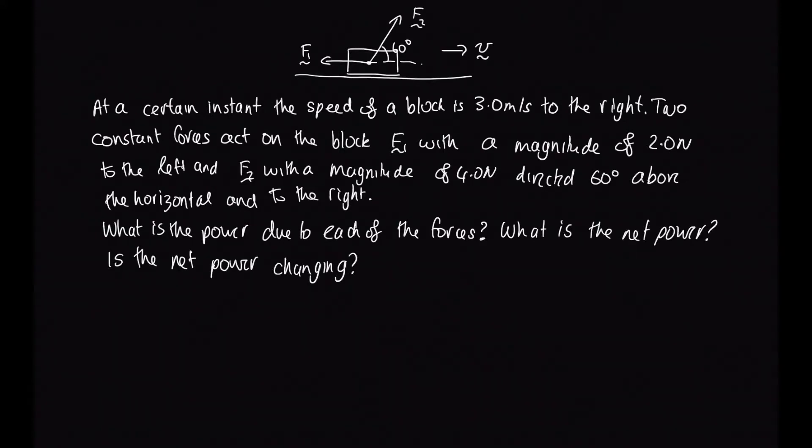Okay, so first of all we need to work out the power due to force 1. So the power due to force 1 is going to be F1 dot v, and F1 is in the opposite direction from v. The magnitude of F1 we're told is 2 newtons, so this is minus 2 newtons because it's in the negative direction, and v is 3 m/s. So when we take the dot product of those, we end up with minus 6.0 watts.